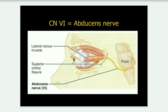The abducens nerve arises from the pons of the brain and exits the brain stem. It then enters into the subarachnoid space, pierces the dura mater, and travels through the cavernous sinus at the temporal bone. Before entering into the orbit of the eye, it gives the LR6, that is your lateral rectus muscle.